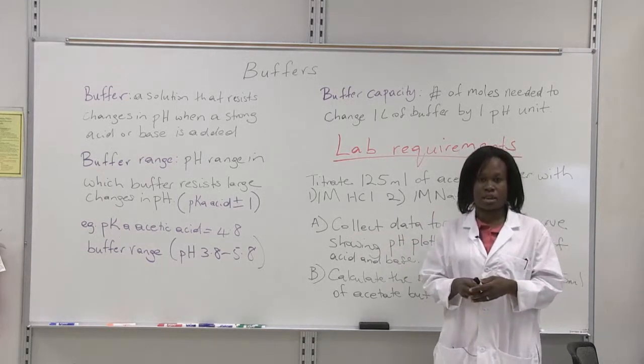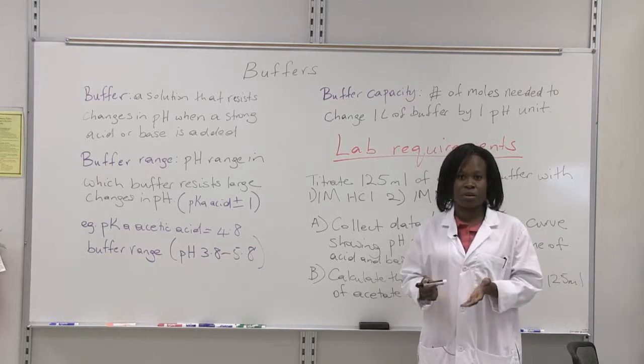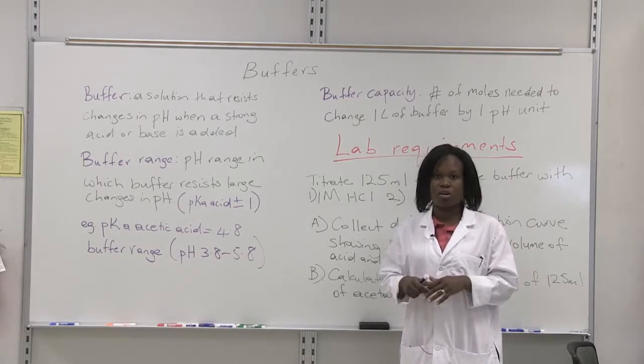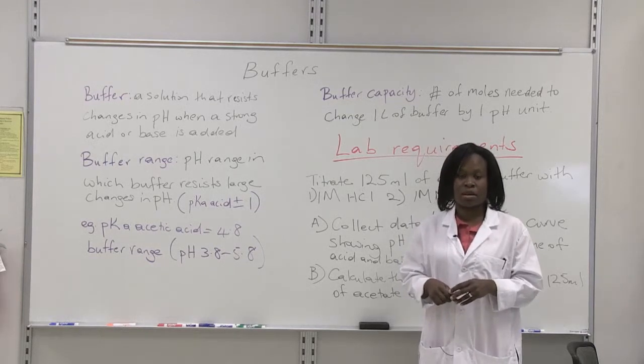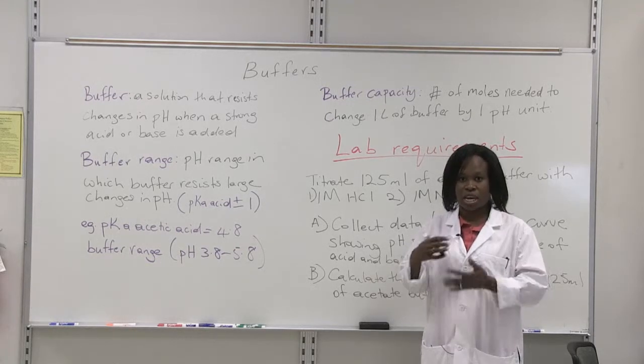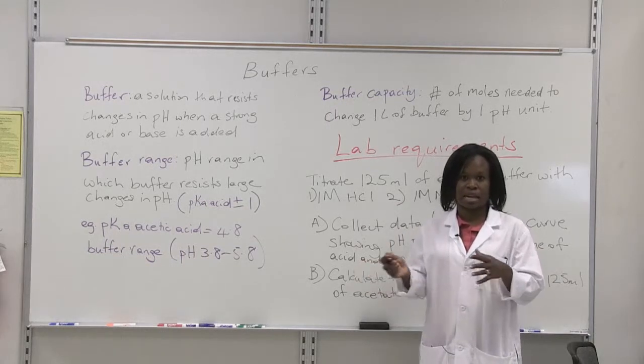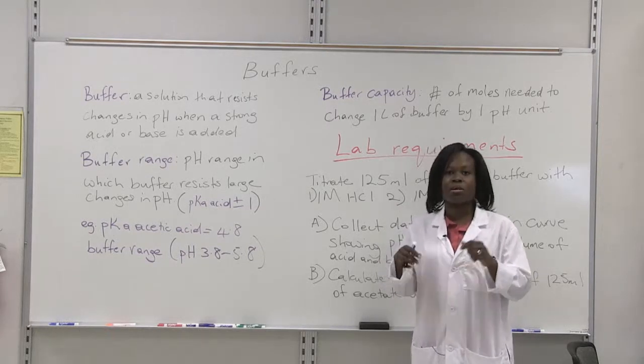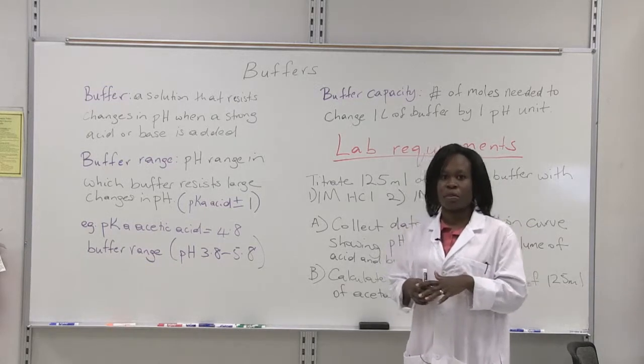Buffers are important in everyday life, especially in our bodies. For example, our blood needs to be at a pH of about 7.4. In order to ensure that, a buffer system called the bicarbonate carbonic acid system is there so that any acid or base added to the blood system that could cause a drastic change in pH, the buffer system is there to prevent that change.